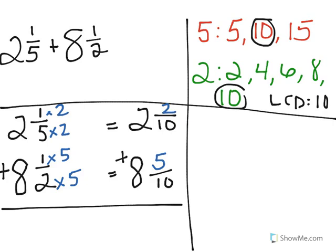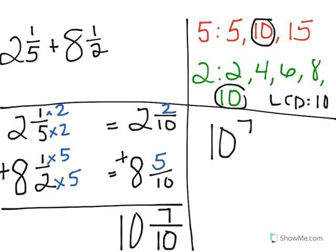Now I can go ahead and add my mixed numbers. Remember, we're just going to copy down that denominator, because we don't do anything with that. We're just going to put that 10 down. And 2 plus 5 is 7. Now we can add our whole numbers. 2 plus 8 is 10. So I have 10 and 7 tenths. And my last step is to simplify my answer if possible.